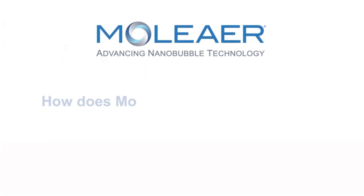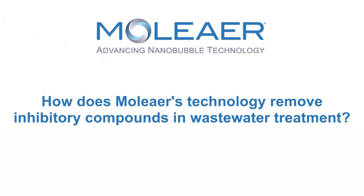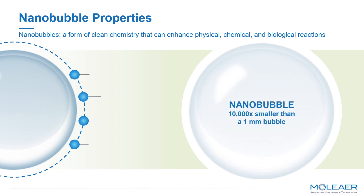How does Molière's technology remove inhibitory compounds in wastewater treatment? Molière's technology generates a form of clean chemistry using nanobubbles, which have unique properties due to their size. Nanobubbles are roughly 100 nanometers in diameter — 10,000 times smaller than 1 millimeter fine bubbles that you would get from floor-mounted diffusers.